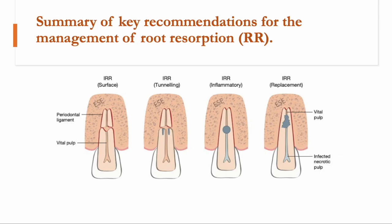The odontoclastic resorption process may be transient and self-limiting, particularly during the initial phases of intra-alveolar root fracture healing, referred to as internal surface or internal tunnel resorption, as reported by Andreessen in 1988. The internal surface resorption appears as a circular radiolucent area at the intersection of the root canal and fracture line due to the rounding of the fracture edges and is usually self-limiting, while internal tunneling resorption leaves the canal wall intact and burrows behind the predentin layer of the walls.